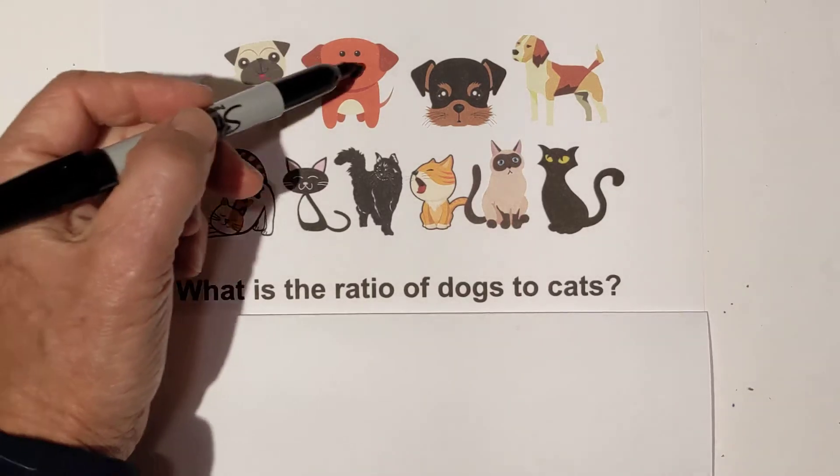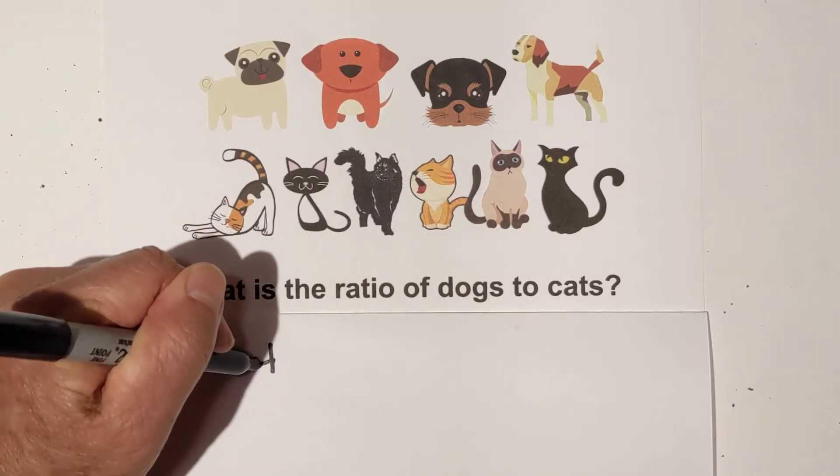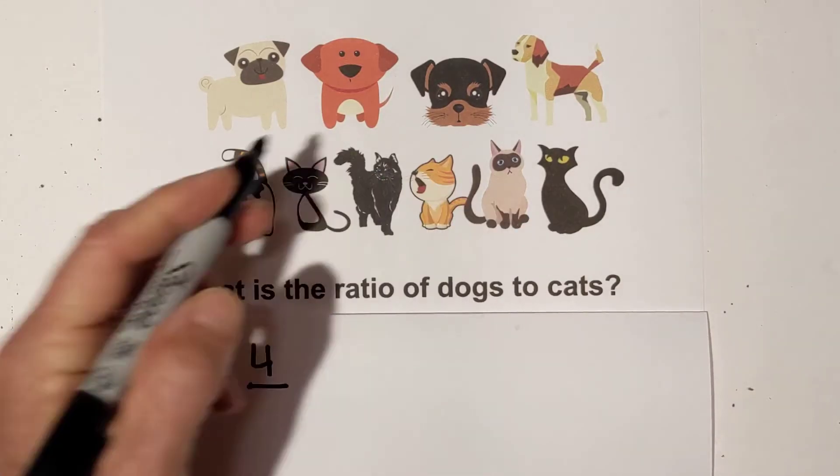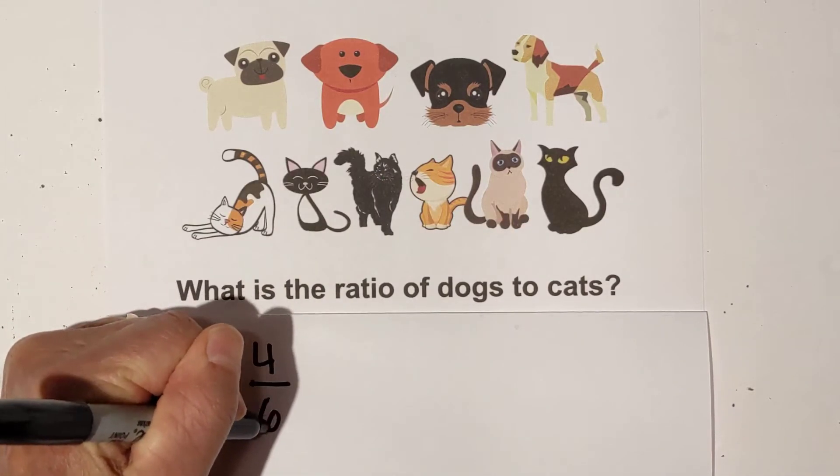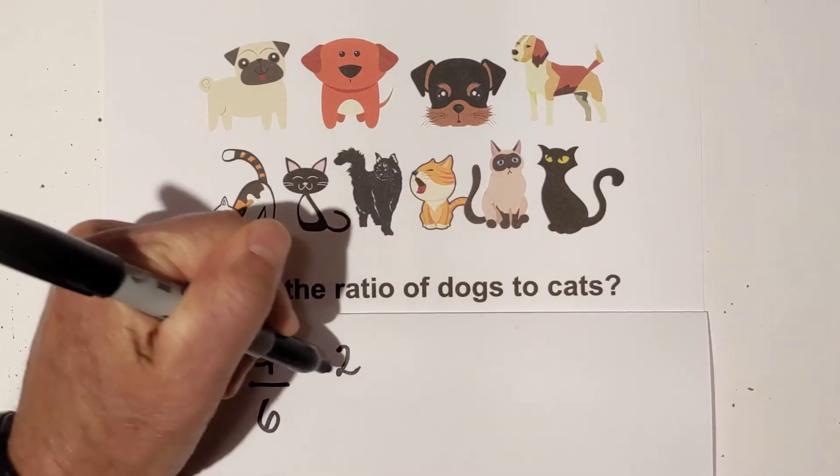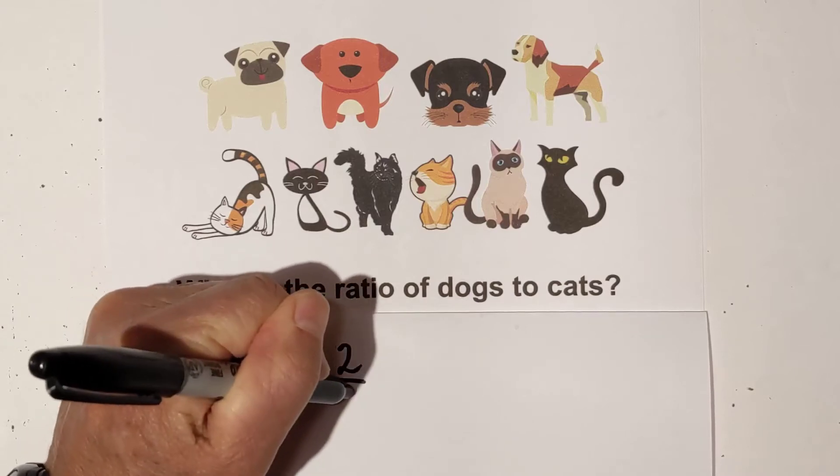If you count the number of dogs, we have one, two, three, four dogs, and you can write it in fraction form. We have three, four, five, six cats. Just like a fraction, you can simplify it. Two goes into four two times, goes into six three times.